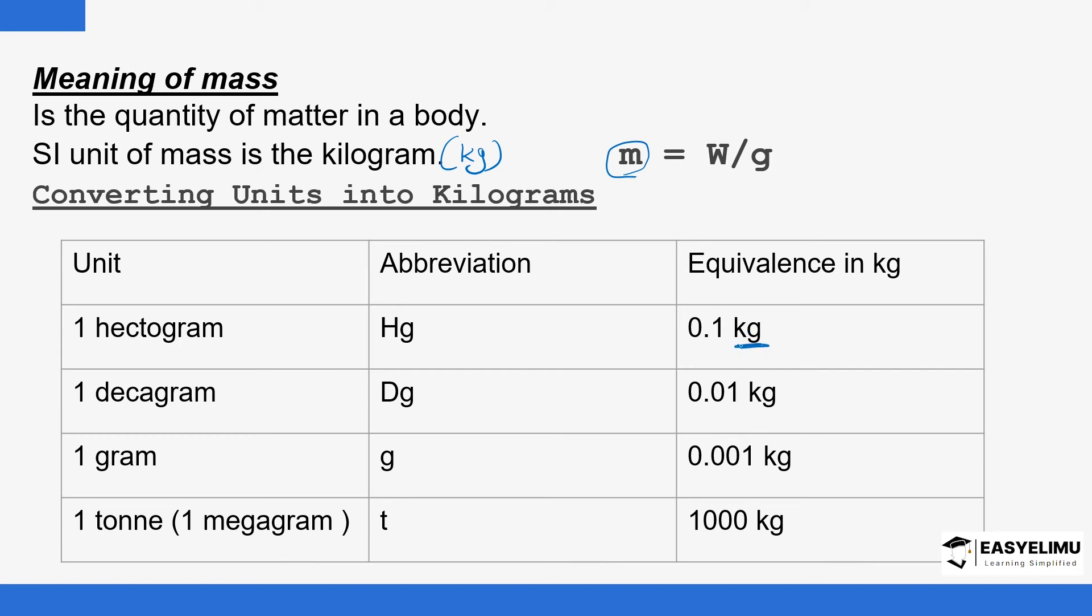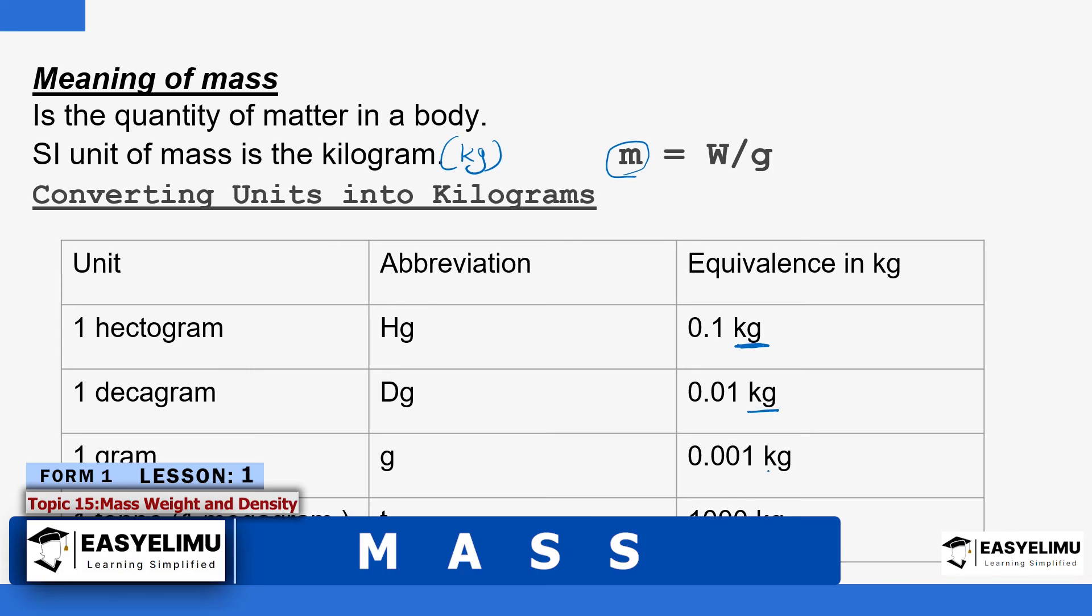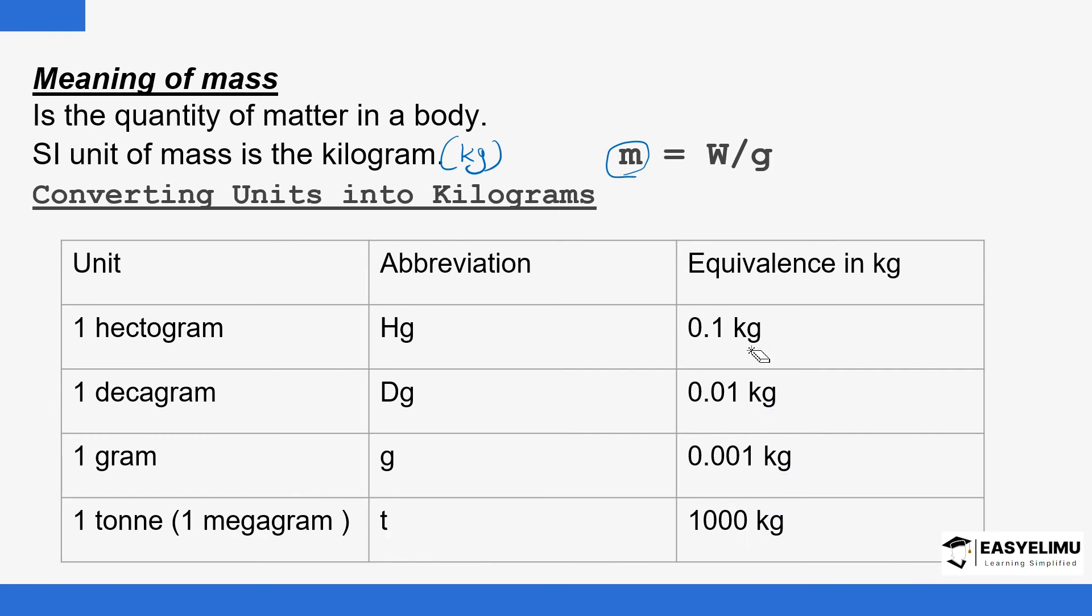Like this one here is read as 0.1 kilograms, 0.01 kilograms, 0.001 kilograms, and 1,000 kilograms. These prefixes are also used in converting units in mass, just like hectare, decagram, centi, and kilo, even milli. The same prefixes that we used when we are talking about unit conversions on length are still used here.